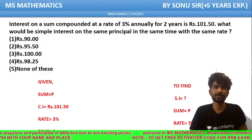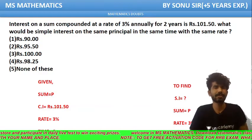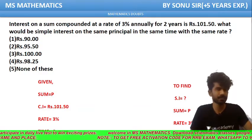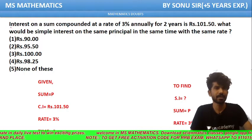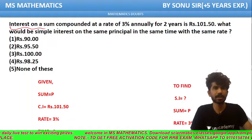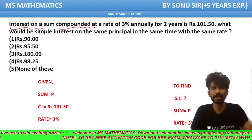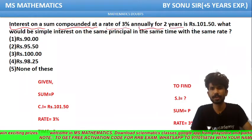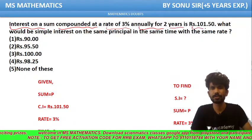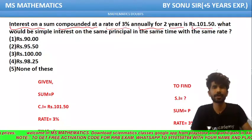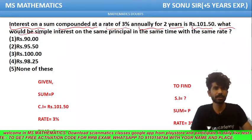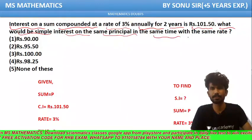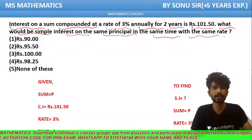Hello, here is a question from compound rate and simple interest. The question is: interest on a sum compounded at a rate of 3% annually for 2 years is Rs. 101.50. What would be the simple interest on the same principal in the same time with the same rate?